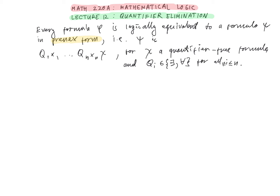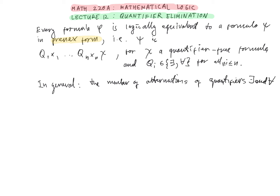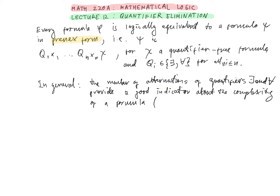Existence of a formula psi of this form equivalent to a given formula phi can be shown by induction on the height of the formula phi. In general, the number of alternations of quantifiers — existential and universal — provides a good indication about the complexity of a formula, and also of a set defined by this formula in a given structure.